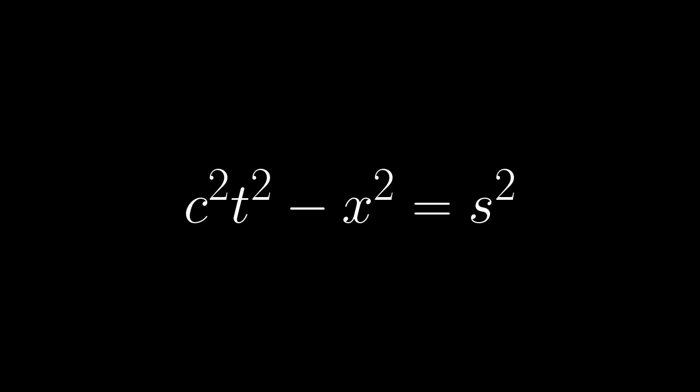What changes from one observer to the next is how big a slice of time and space, the projection of the interval, they see.